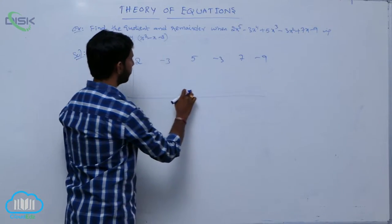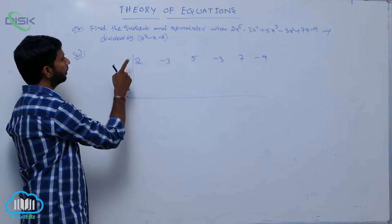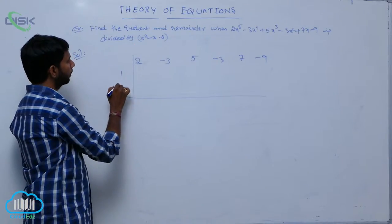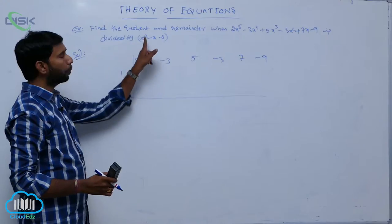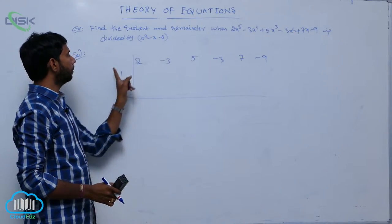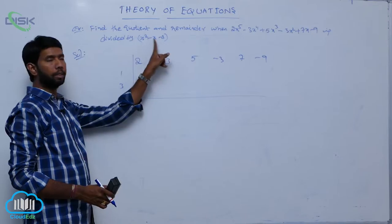Write the coefficients of the given expression. That is 1, 3. Write the coefficients with opposite signs. Here minus 1, the x coefficient is minus 1, it is plus 1. The constant is minus 3, plus 3.